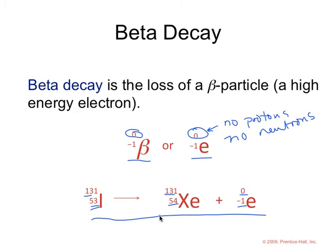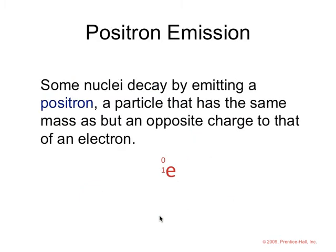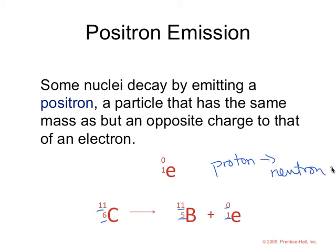Positron emission is one that may not have been talked about. And that is a particle that has the same mass but an opposite charge to that of an electron. If you notice, again, atomic number is conserved, atomic mass is conserved. This positron emission essentially turns a proton into a neutron.